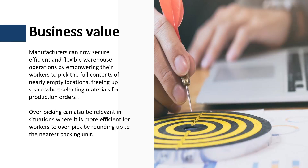Overpicking is useful in scenarios like picking the full content of nearly empty locations to free up space in the warehouse, or over-picking by rounding up the required quantity to the nearest packing unit. Using this feature, you can permit over-picking of raw materials and manage it by a certain percentage, so warehouse workers can over-pick as needed and will be notified if they exceed the defined threshold.